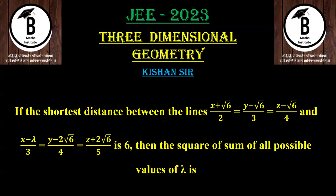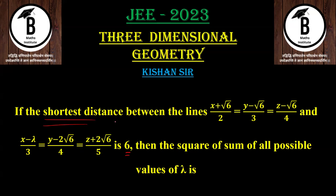If the shortest distance between the two lines — first line: (x + √6)/2 = (y − √6)/3 = (z − √6)/4, and the second line: (x − λ)/3 = (y − 2√6)/4 = (z + 2√6)/5 — is equal to 6, then we need to find the square of the sum of all possible values of lambda.